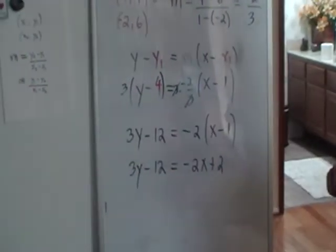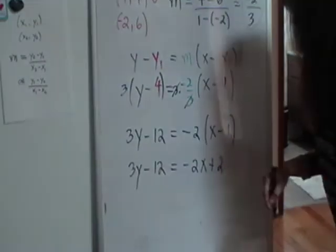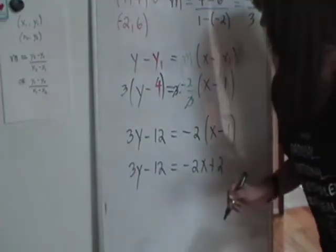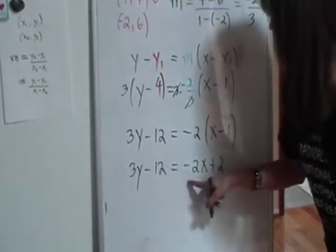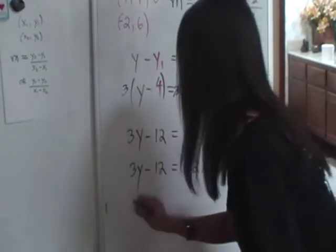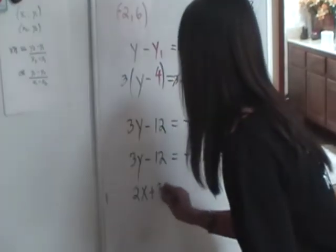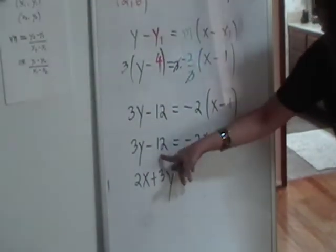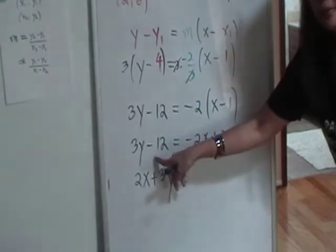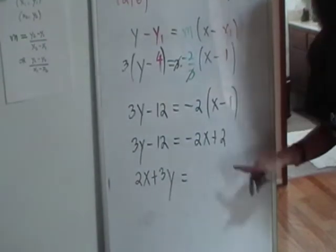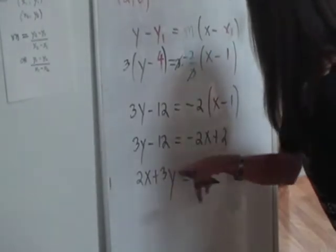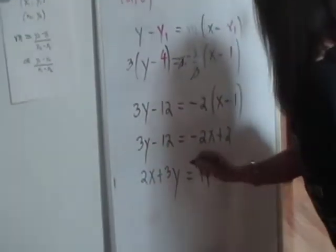Let's say we want the standard form of the equation. So if we want the standard form of the equation, we want x and y together on one side. So I can add 2x to both sides of the equation to get 2x plus 3y equals, now I want to move that minus 12 over to the right side, so I can do that by adding 12 to both sides. So adding 12 to both sides, the negative 12 will disappear here, and the 2 will become a 14.